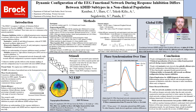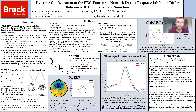Here is the figure of the stimuli used in the task. We had 1,200 letters presented quasi-randomly, and participants responded quickly and accurately to the letter X, but only when it was preceded by the letter A. This provided us with two conditions of interest: the go condition, where participants made a response, and the no-go condition, where they withheld a response.